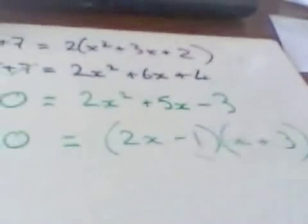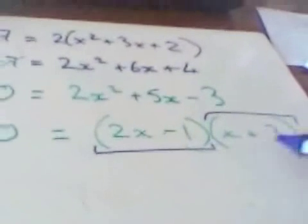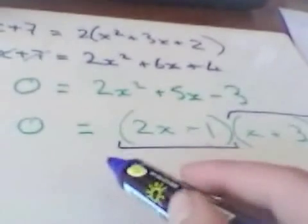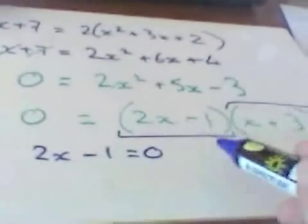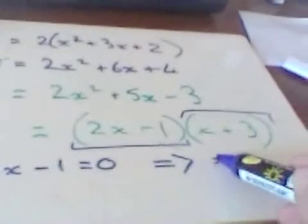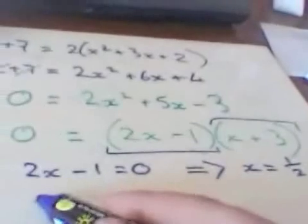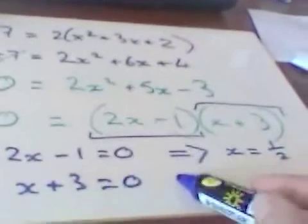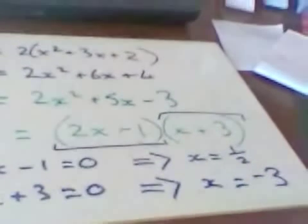Now we have either this part is equal to 0 or (x+3) equals 0. So we have a solution of 2x-1=0, which would imply x equals a half. Or we have x+3=0, which implies x equals -3.